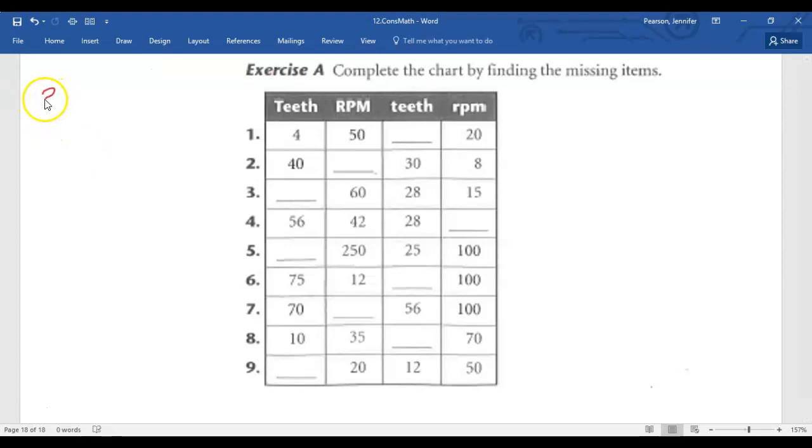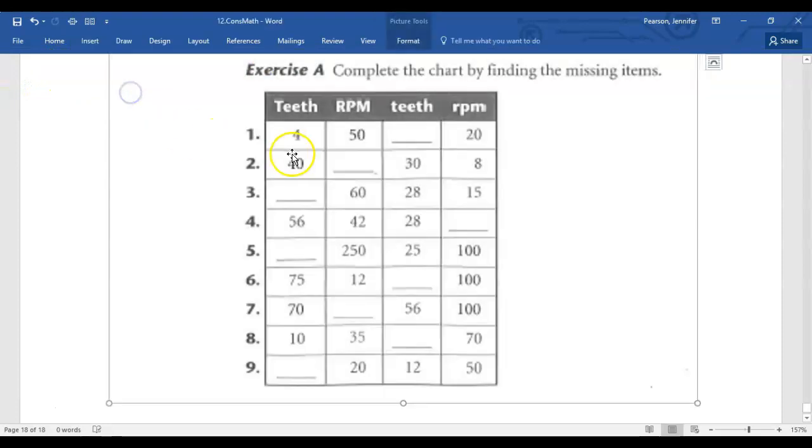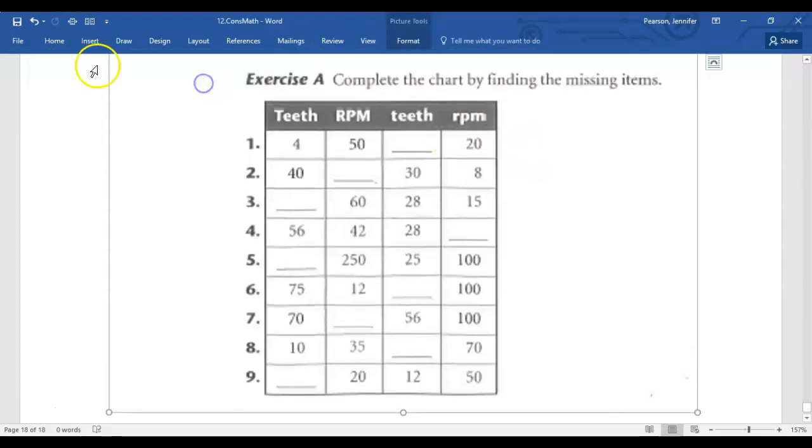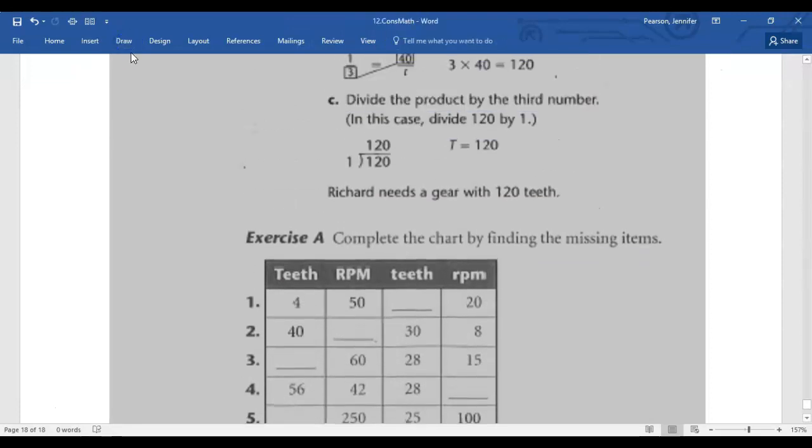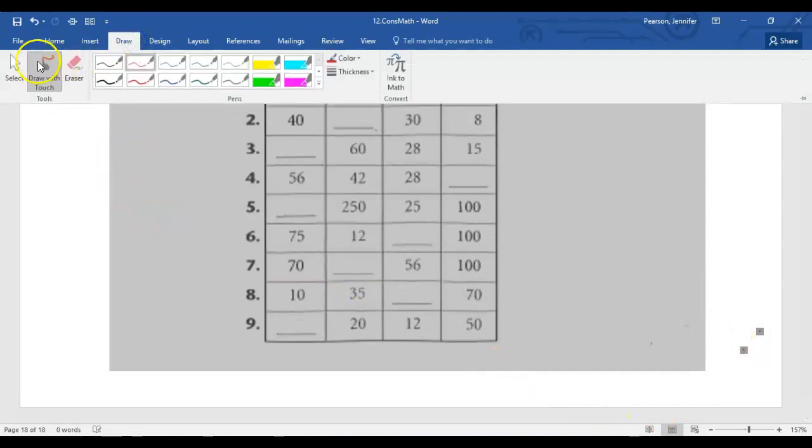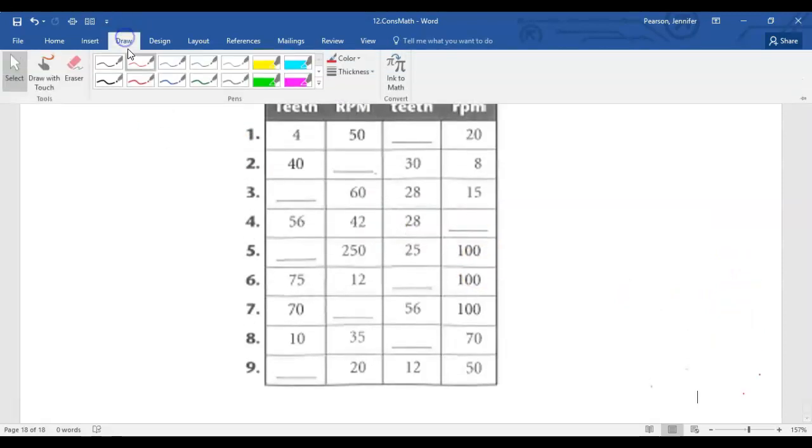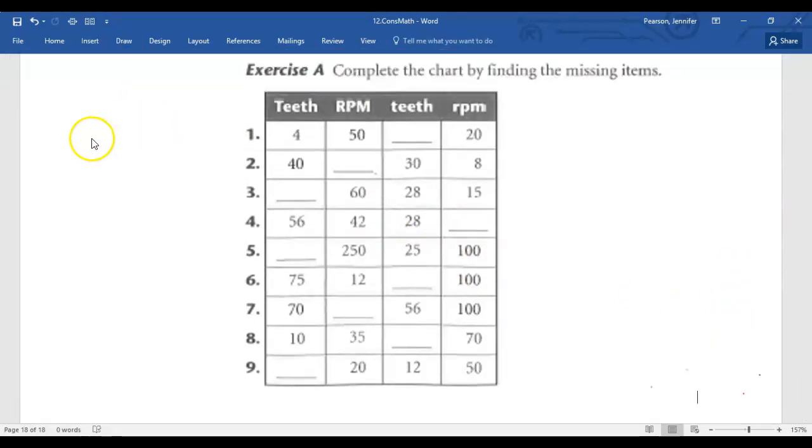This was the ratio from the last page. We have capital RPM. Oops, let me start that over. Okay, we'll get it eventually. There we go. We have capital RPM.